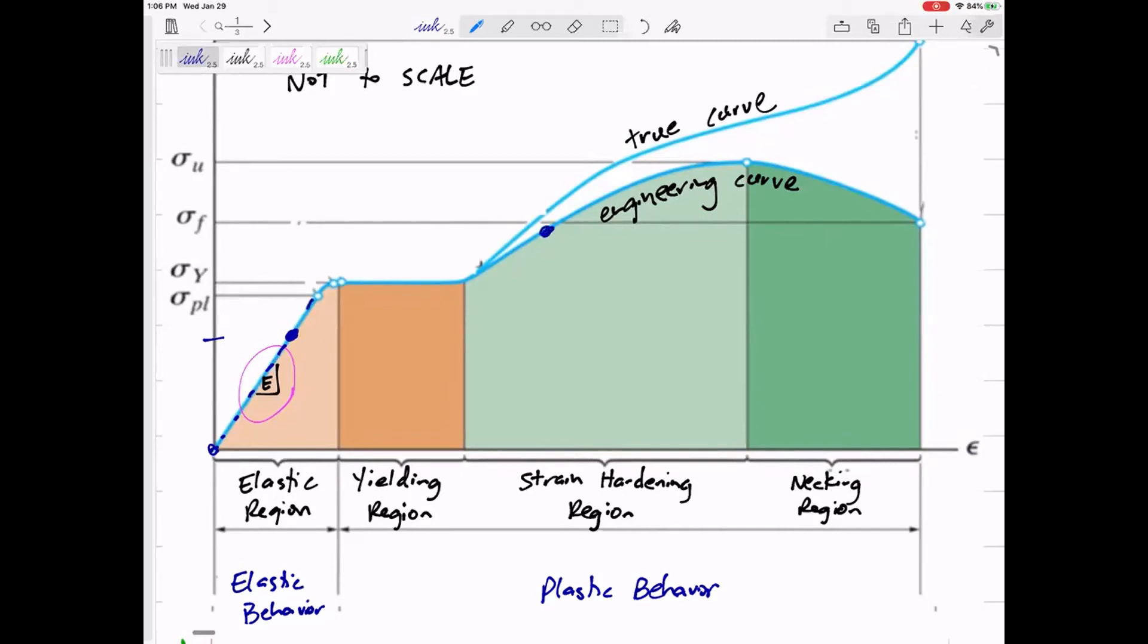And so there's no deformation. But once we start loading it anywhere into the yielding region or past it, it's going to unload at a slope of E, and so it doesn't make it back to zero. What does this point mean? That point means even with zero stress, it now has some permanent strain.